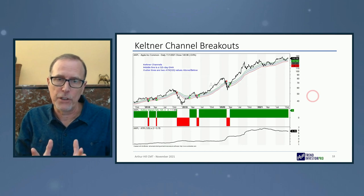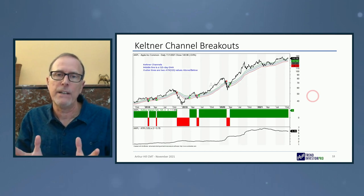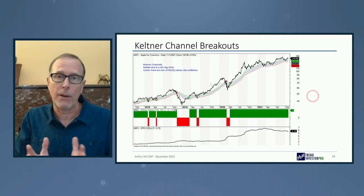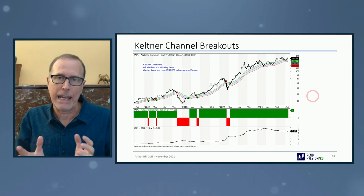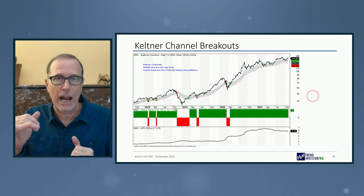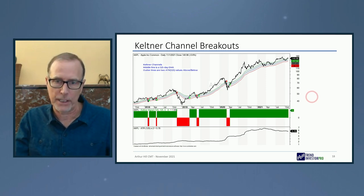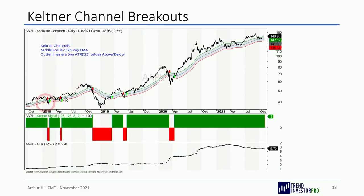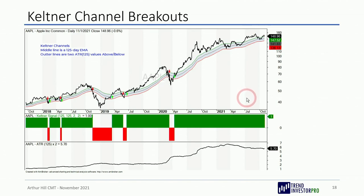Keltner Channels are very similar to Bollinger Bands, but instead of standard deviation they use Average True Range, developed by Wells Wilder. ATR is also a volatility indicator — expanding means higher volatility, contracting means lower volatility. Using a 125-day EMA in the middle, a break above the upper channel is a bullish signal and a break below the lower channel is bearish. Here on Apple you can see the bearish signal during the COVID crash, then a bullish signal in April that turned out very well — one of those signals that pays for previous whipsaws.